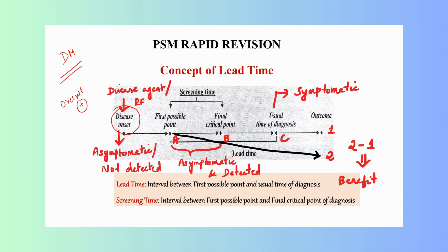At the first possible point, this is the earliest point where you are actually able to diagnose the disease with the help of a screening test. If you apply a screening test between the first possible point and the final critical point, you will be able to diagnose the disease at an early stage compared to the usual time of diagnosis.